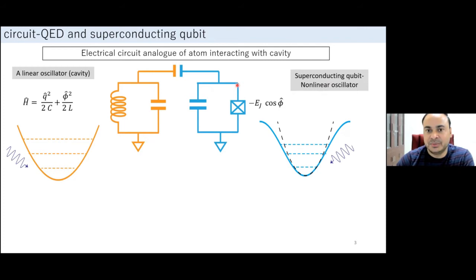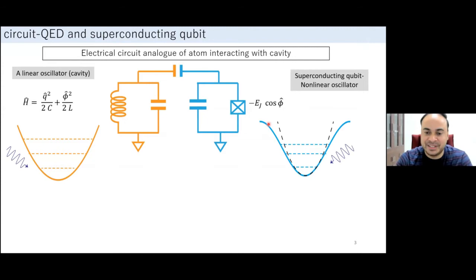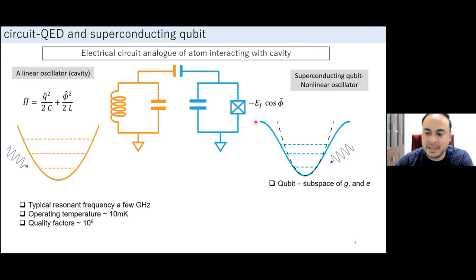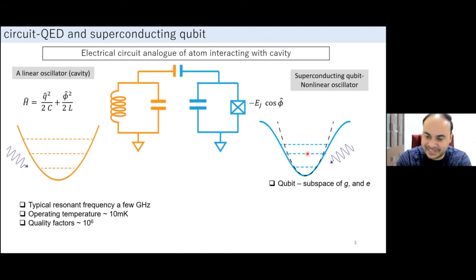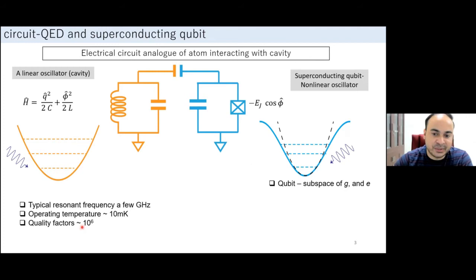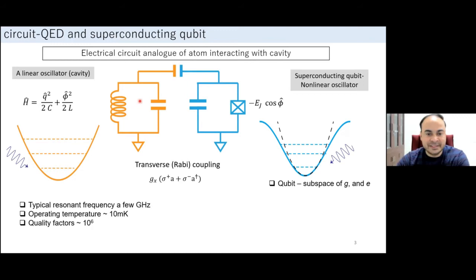Superconducting qubits replace the linear inductor with a Josephson junction. The energy stored in a Josephson junction has a cosine form, resulting in unequally spaced energy levels upon quantization. This is the basis of the transmon qubit. Most superconducting qubits are essentially nonlinear oscillators implemented via Josephson junctions, and when cooled to ~10 millikelvin, quality factors of around one million can be achieved at frequencies in the few-gigahertz range.